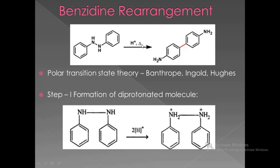The benzidine rearrangement occurs at 150 degrees centigrade in the presence of an acid to give the product benzidine. A new carbon-carbon single bond is formed between the two benzene rings. Various theories have been postulated for the benzidine rearrangement. We are going to examine the polar transition state theory proposed by Banthorpe, Ingold, and Hughes.